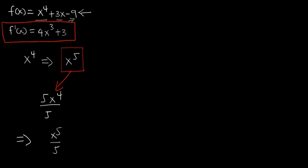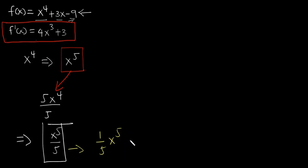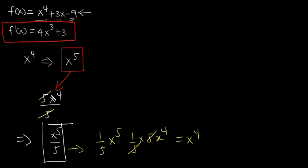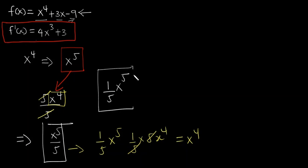If we differentiate x to the power 5 divided by 5, we write it as one over 5 times x to the power 5. Differentiating gives one over 5 multiplying 5x to the power 4, and the fives cancel, leaving x to the power 4. So we actually differentiated one over 5 times x to the power 5 to get x to the power 4.